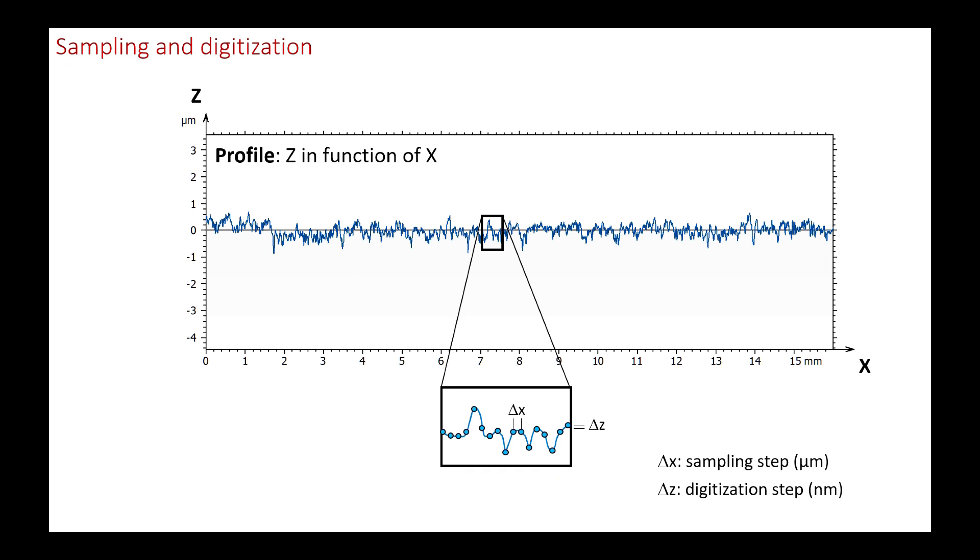The vertical value is converted to a digital number, hence the name digitization. This number can be coded on 12 bits, 14 bits, 16 bits or more, leading to a variable number of coding levels. With a 12-bit analog digital converter, making it possible to code 4096 levels, a vertical digitization step of 0.24 micrometers is obtained for a vertical excursion of 1 millimeter.